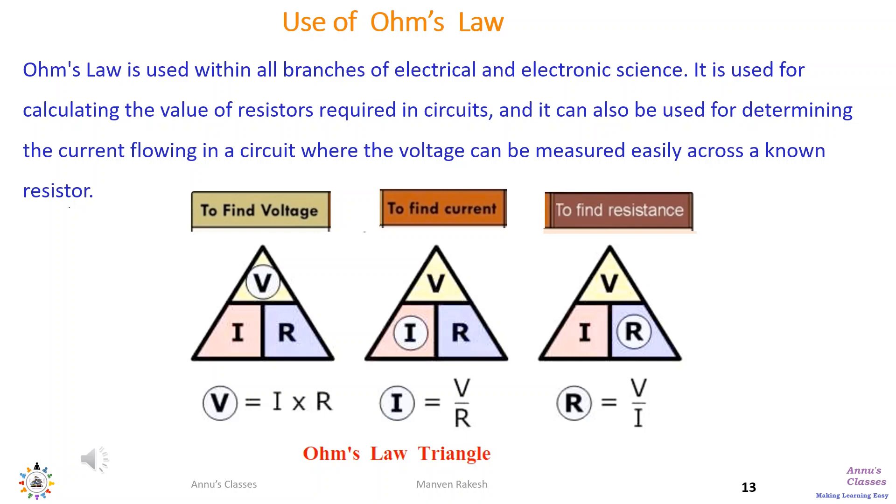Say we have to calculate V. Then in the triangle you can see that I and R are nearby so they have to be multiplied. If we have to find I, V is above the R so I is equals to V upon R. Similarly, R is equals to V upon I. Hope you enjoy this simple way of remembering Ohm's law.